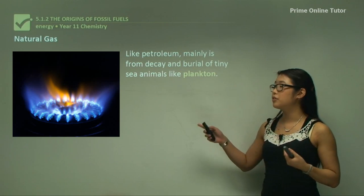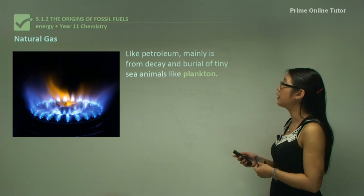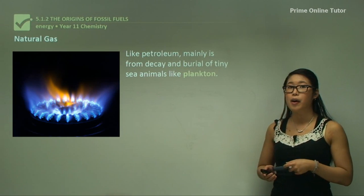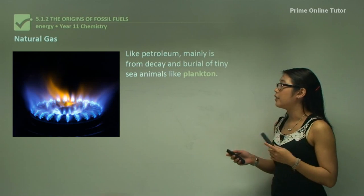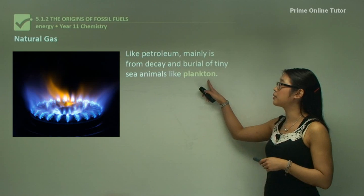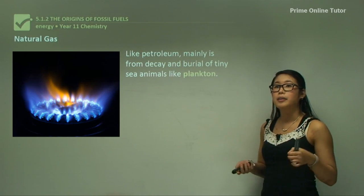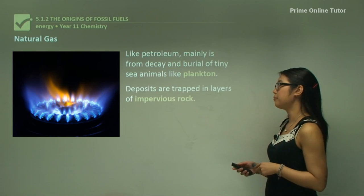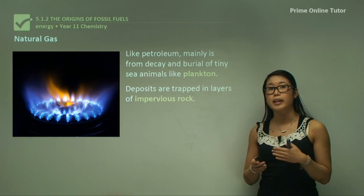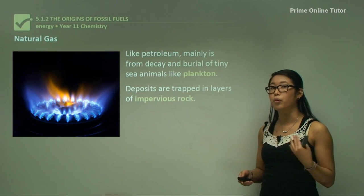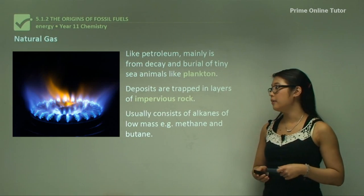Natural gas is usually used in stoves and certain cars. Like petroleum, it mainly comes from decay of animals and dead plants buried in sand. Usually it's plankton. Plankton are small plants in the sea which die and sink and accumulate together to form natural gas. Deposits are trapped in layers of impervious rock and usually consist of alkanes of low mass such as methane and butane.